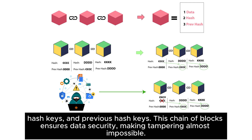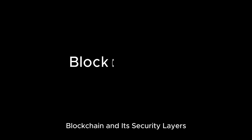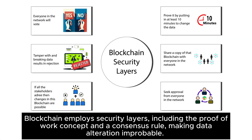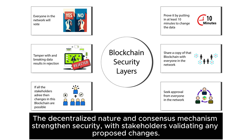This chain of blocks ensures data security, making tampering almost impossible. Blockchain employs security layers including the proof of work concept and a consensus rule, making data alteration highly improbable.